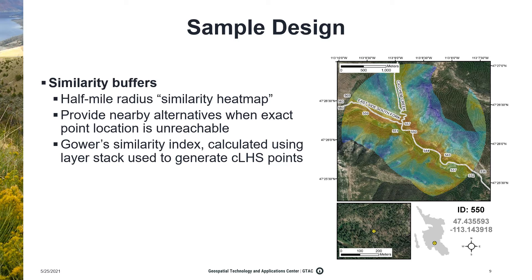Another tactic we used on the Bob Marshall was similarity buffers and field maps. These can help folks in the field find areas to sample that are similar to the target point in the event that the exact site is not accessible. This figure is an example of a map I created for a point on the Bob Marshall. The upper panel shows a similarity heat map where red areas are going to be the most similar, and the metric of similarity here is the Gowers Index, which is a measurement of relative similarity.